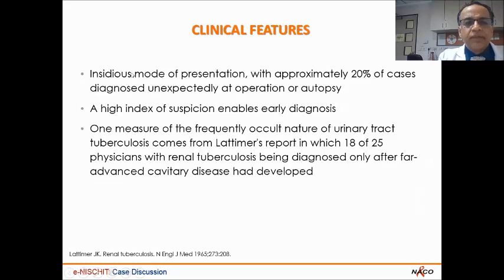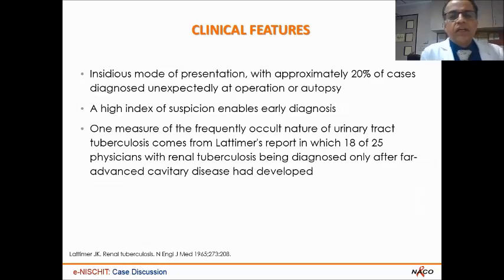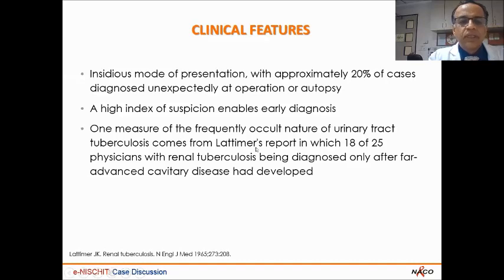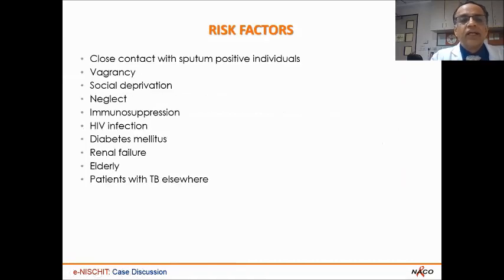Clinically, it is an insidious mode of presentation, with about 20% of cases diagnosed only at operation or autopsy. A high index of suspicion enables early diagnosis. One measure of the frequently occult nature is Latimer's report published in NEJM in 1965, in which 18 of 25 physicians with renal tuberculosis were diagnosed only with far advanced cavitary disease. Even amongst physicians, the disease progresses insidiously, so a high index of suspicion is required.